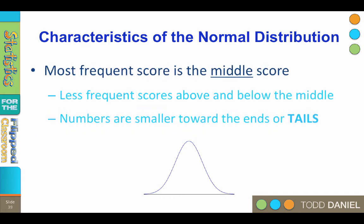The most frequently occurring scores will be in the middle part of the normal curve, where the curve is furthest from the x axis. Less frequently occurring scores are further away from that middle score, in what we will call the tails of the curve.